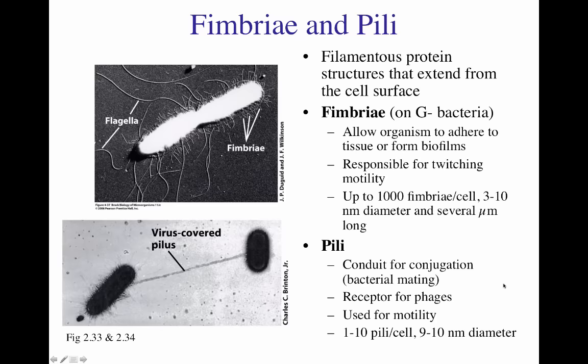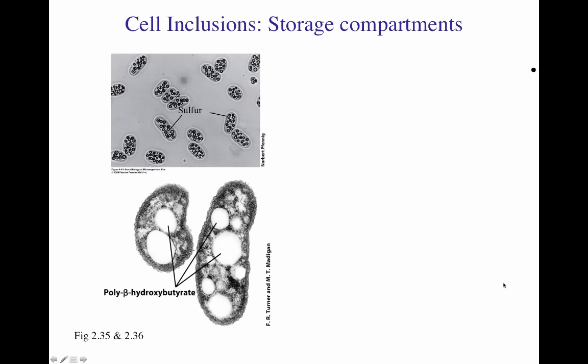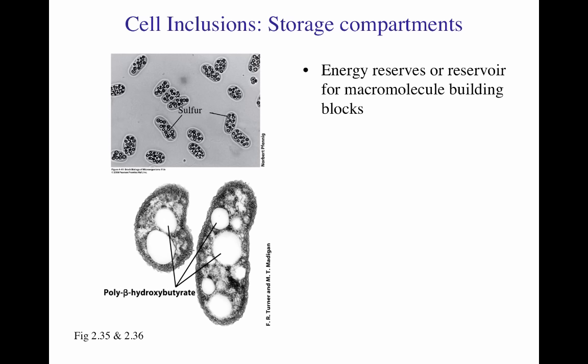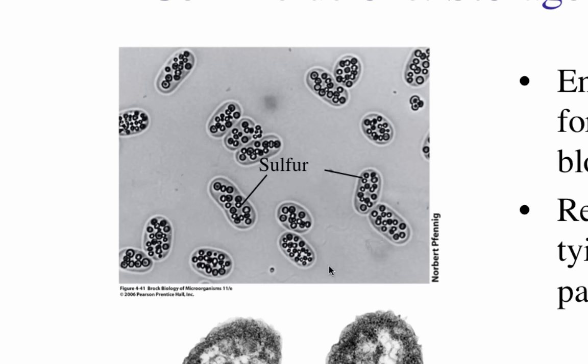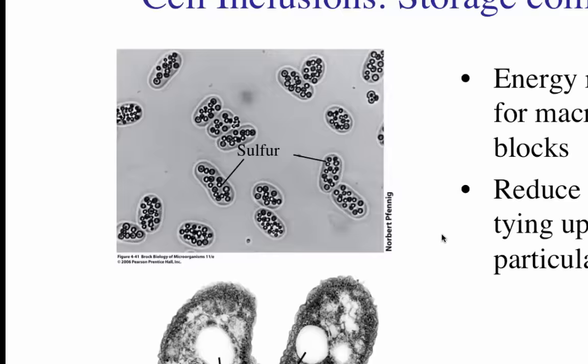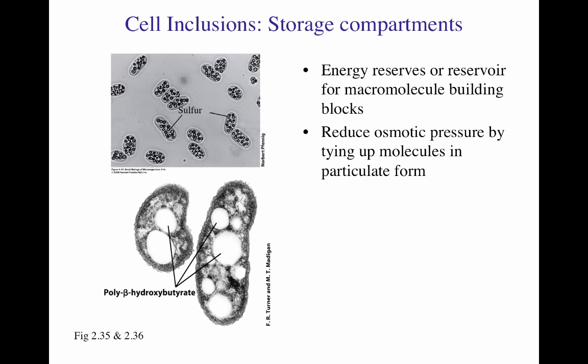Prokaryotes do not have many membrane-bound organelles, but they still have internal structures. Some are called cell inclusions — storage compartments where bacteria save byproducts of their metabolism — used for energy reserves or macromolecule building blocks. For example, some sulfur-respiring bacteria produce sulfur granules. They are also used to reduce the osmotic pressure by tying up molecules in particulate form.